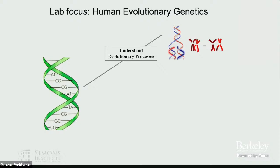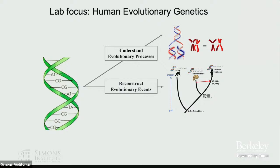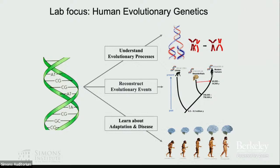As a way of introduction, my lab works on genomic data and there are three main questions we ask. One of them is to understand how evolutionary processes generate all the genetic variation we observe around us. We then try to use this understanding as a molecular clock to learn about when different evolutionary events occurred in our history, and use that to understand human adaptation and disease. Today I'm going to talk about this very first topic because it's really fundamental to everything we do in evolutionary biology.